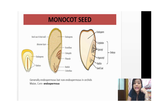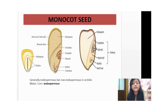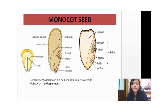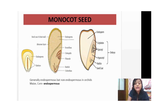Seeds are of two types: monocot seeds and dicot seeds. Monocot seeds are generally endospermous, meaning they contain endosperm. Sometimes there is no endosperm — for example, orchids have no endosperm, so they are known as non-endospermous. Another crop such as maize (corn) is endospermous because it contains endosperm. In maize, the endosperm consists of the entire fleshy food part, which provides food to the growing seed. There is also a seed coat and a layer known as the aleurone layer, which separates the seed coat from the endosperm.